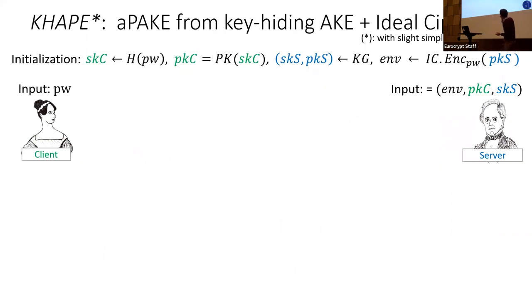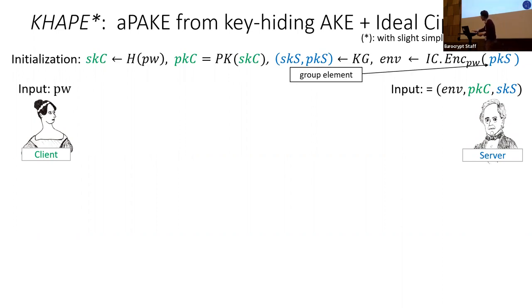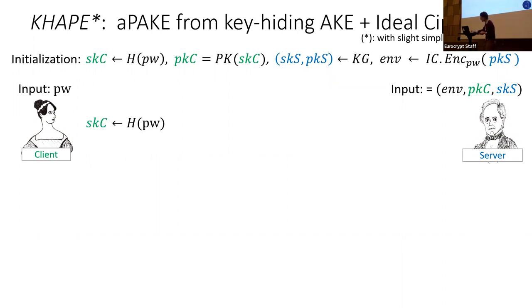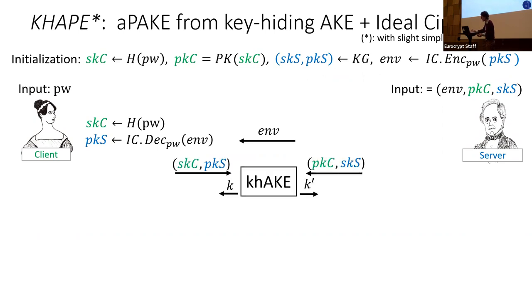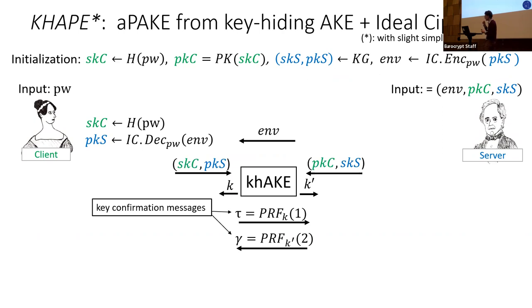Here is how the CAPE protocol works. The client only has a password, so she has no keys, but she derives her secret key by hashing the password. The server's public key is encrypted in an ideal cipher envelope under the password — importantly an ideal cipher over a group. The server supplies this envelope; the client derives the server's public key from it. Then they run key-hiding authenticated key exchange, which is not expensive.